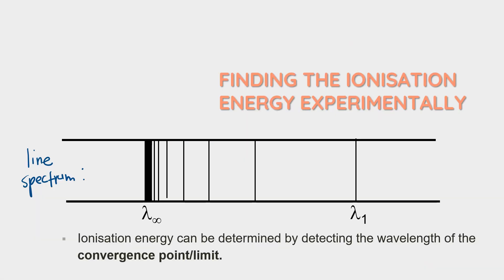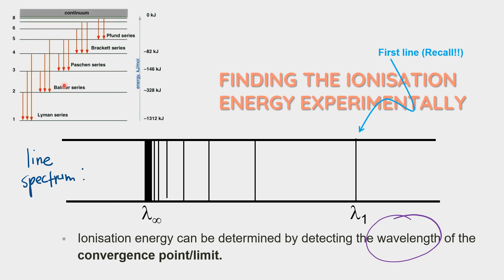Another method to find the ionization energy of hydrogen is by detecting the wavelength at the convergence point or convergence limit in the line spectrum. In the line spectrum, you must identify the first line. All the lines refer to electronic transitions — the movement of electrons from one energy level to another. For an emission series, electrons move from a higher energy level down to a specific lower level. For ionization energy, the process is reversed: the electron from the first energy level moves up to N infinity.